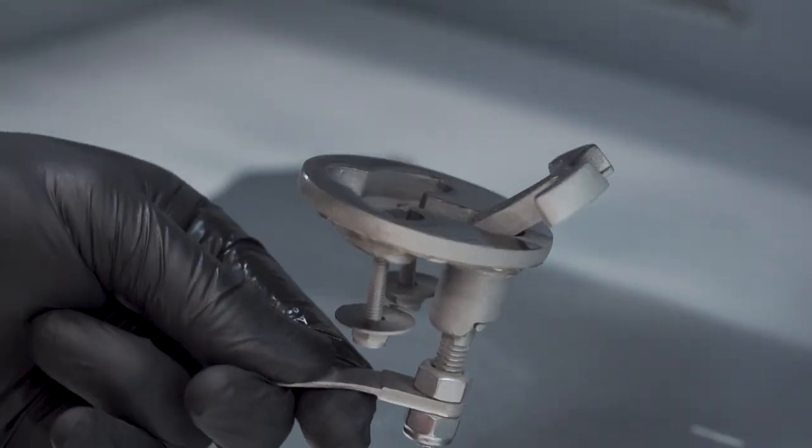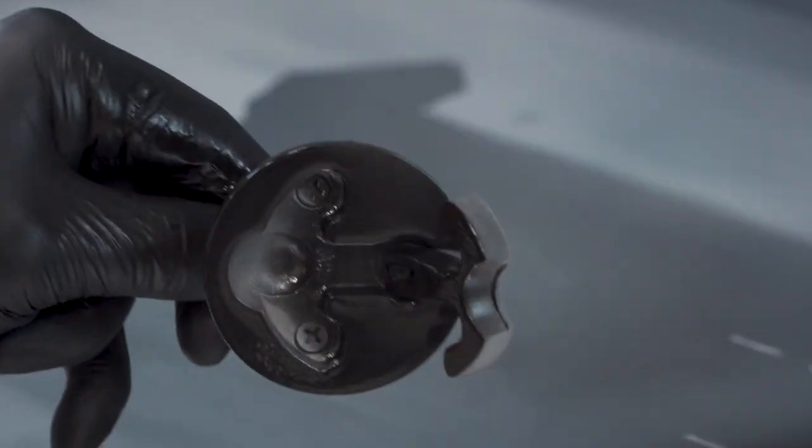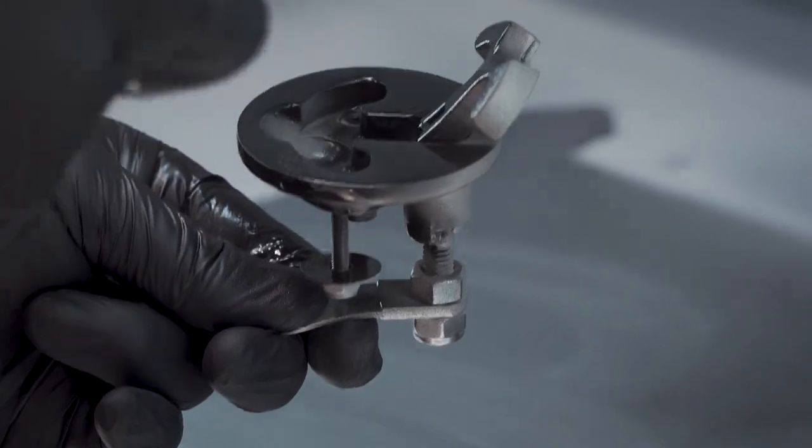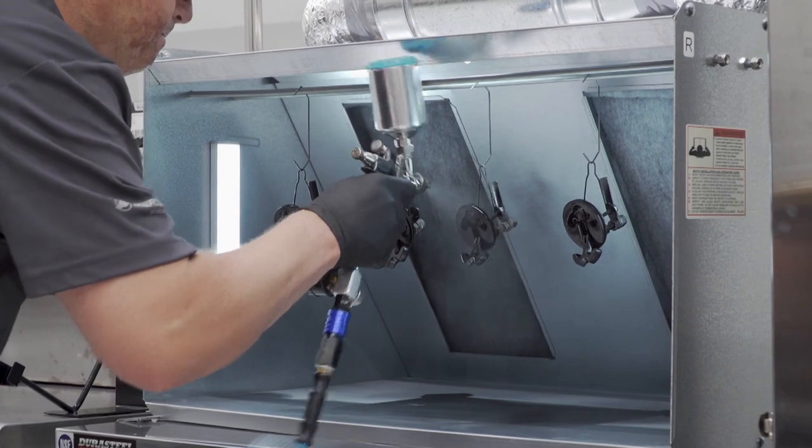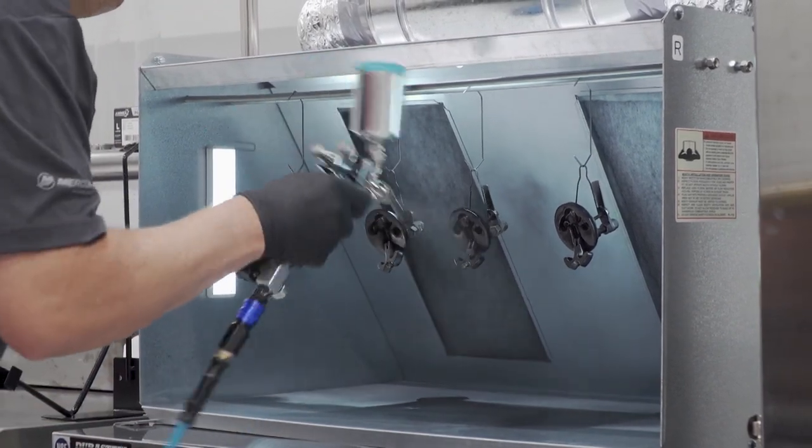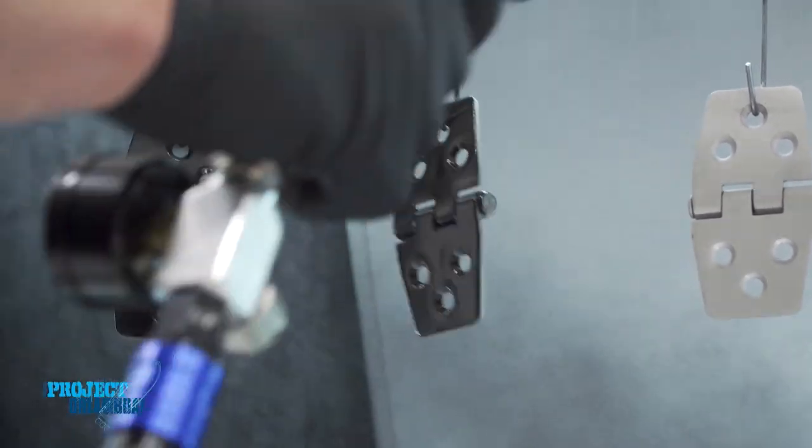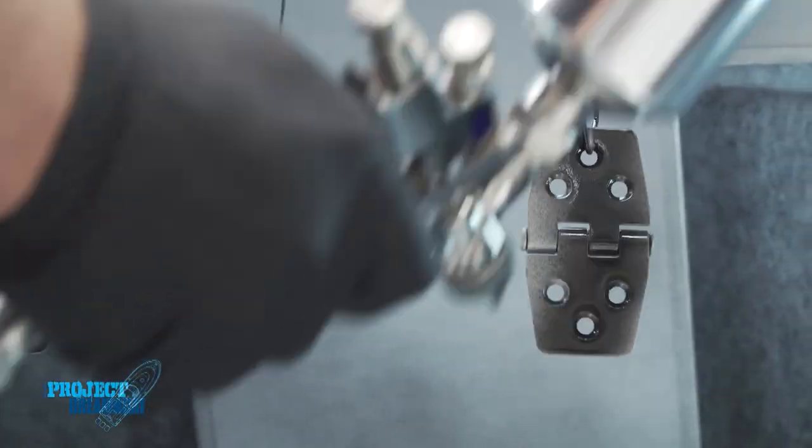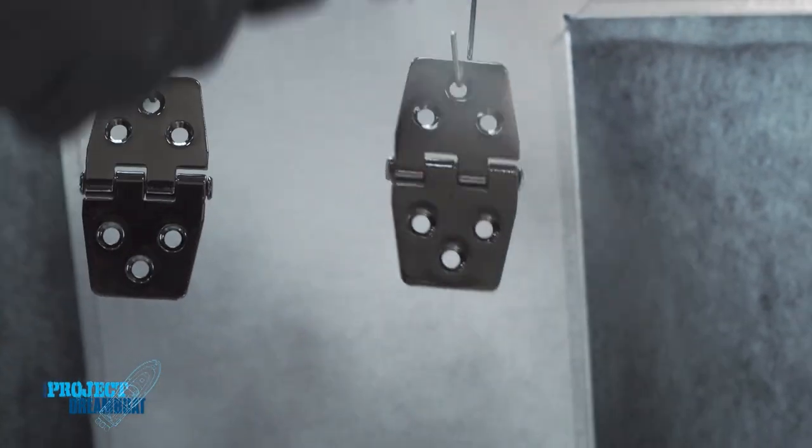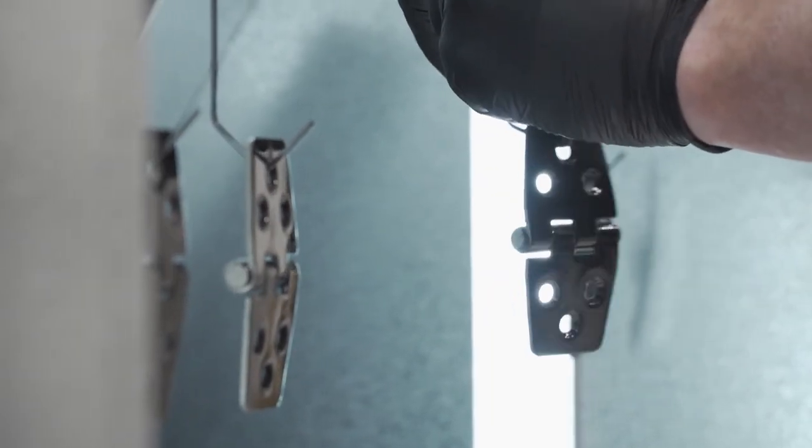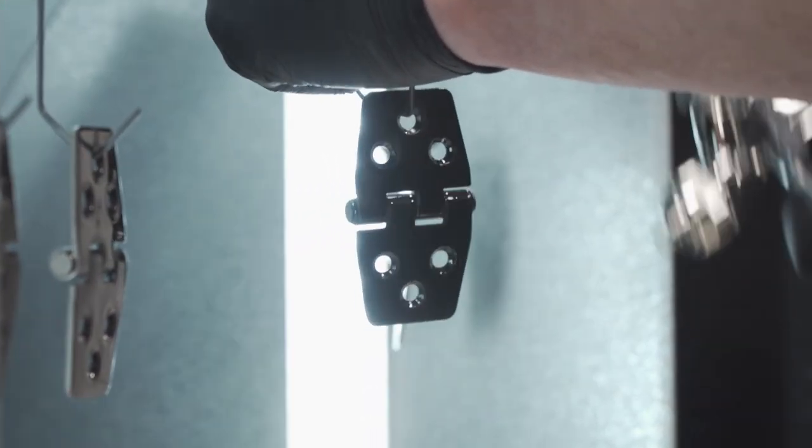When you are laying Cerakote down, a big mistake a lot of people make is they either put too little, which means they put a dry coat down where your paint is almost drying before it gets to the product. The second mistake people make is they put too much product on. So it's really important that you learn to spray Cerakote to the correct mil thickness.